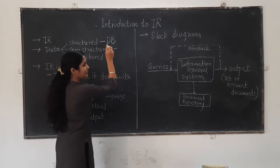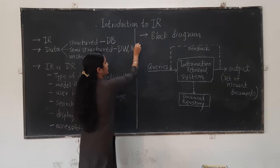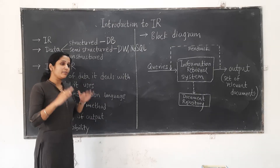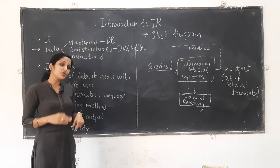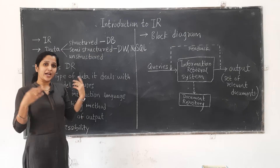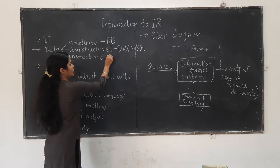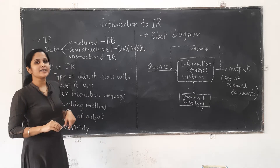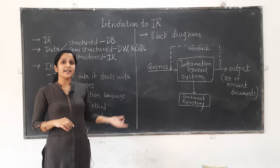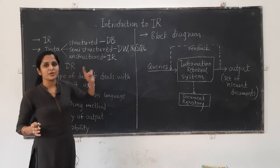Semi-structured data can be dealt with by data warehousing systems as well as NoSQL databases. However, there was no system capable of handling unstructured data, yet there was a huge need for one. From that need, the information retrieval system came into picture. It deals with unstructured data available as e-books, web pages, articles, newsletters — everything available on the World Wide Web.